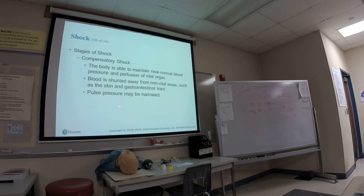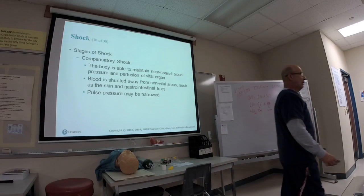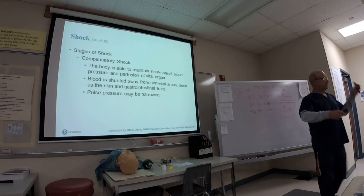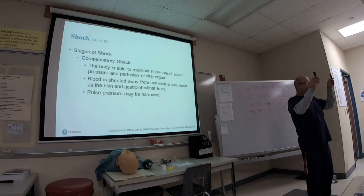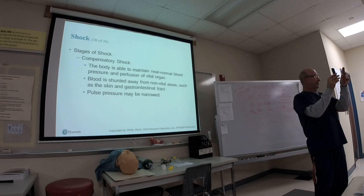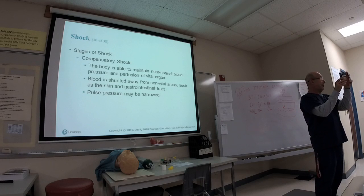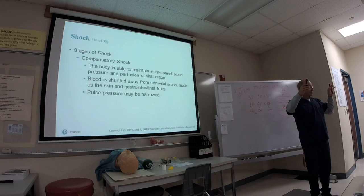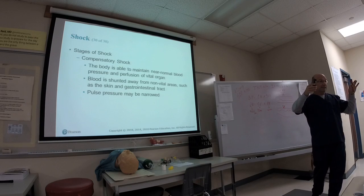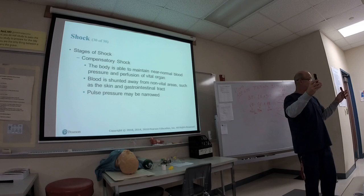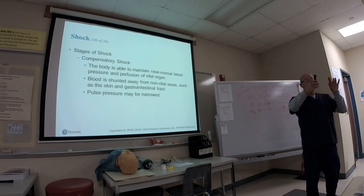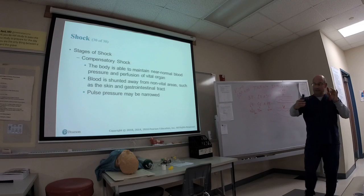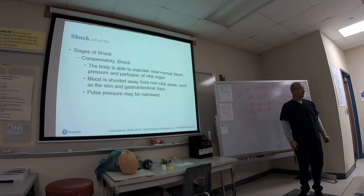A narrowing pulse pressure is when the systolic and diastolic pressures start to come together — they narrow. This is also a sign of cardiac tamponade. As you take vital signs every 5 minutes on an unstable patient in shock, you may notice narrowing pulse pressures. Narrowing pulse pressure can indicate compensated shock.